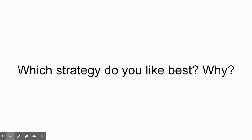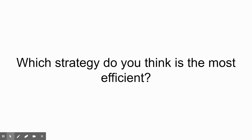Which strategy do you like best so far? Do you like the original strategy of dividing them up into two prisms, getting the volumes and adding them together? Or do you like the subtraction strategy? There's no right or wrong answer — I'm just curious to know which one you like and why. Between the two strategies, which one do you think is the most efficient for you? Which one do you think has fewer steps and would be less work?